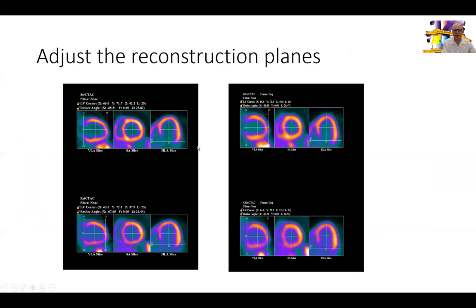The next step is to make sure we adjust the reconstruction planes, so that when we generate the perfusion images to analyze, we are properly positioned over the heart and all images are aligned. On the left you can see the perfusion static images, and on the right the gated images, all after alignment and selection of the area of interest with the selection circle around the heart.